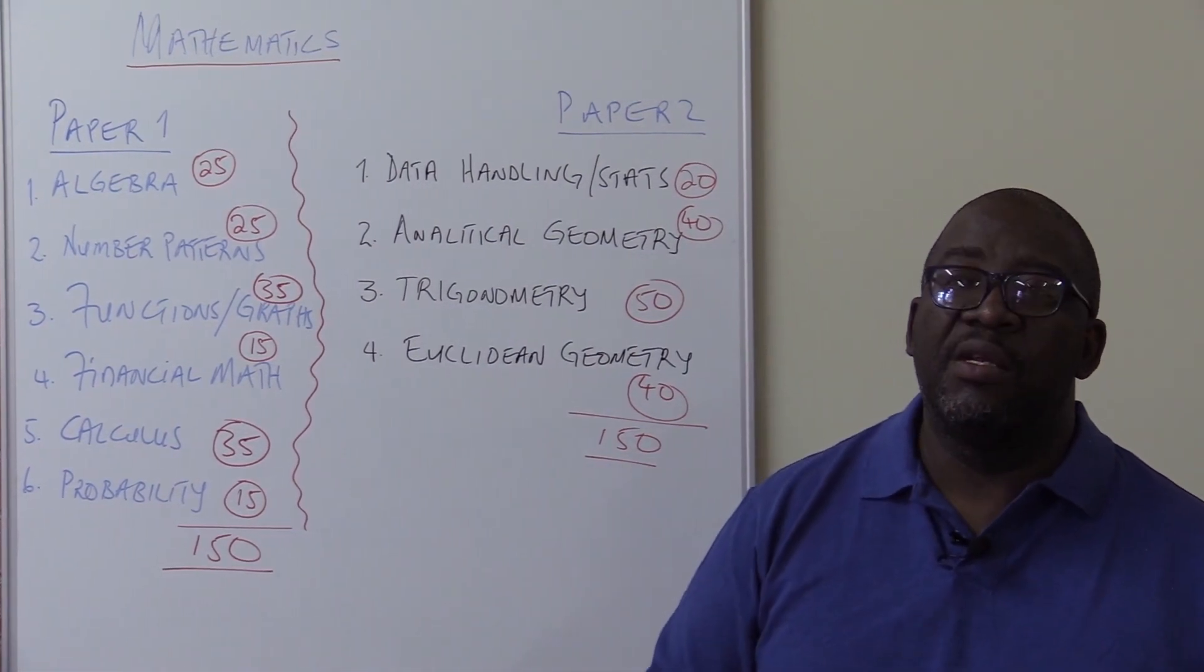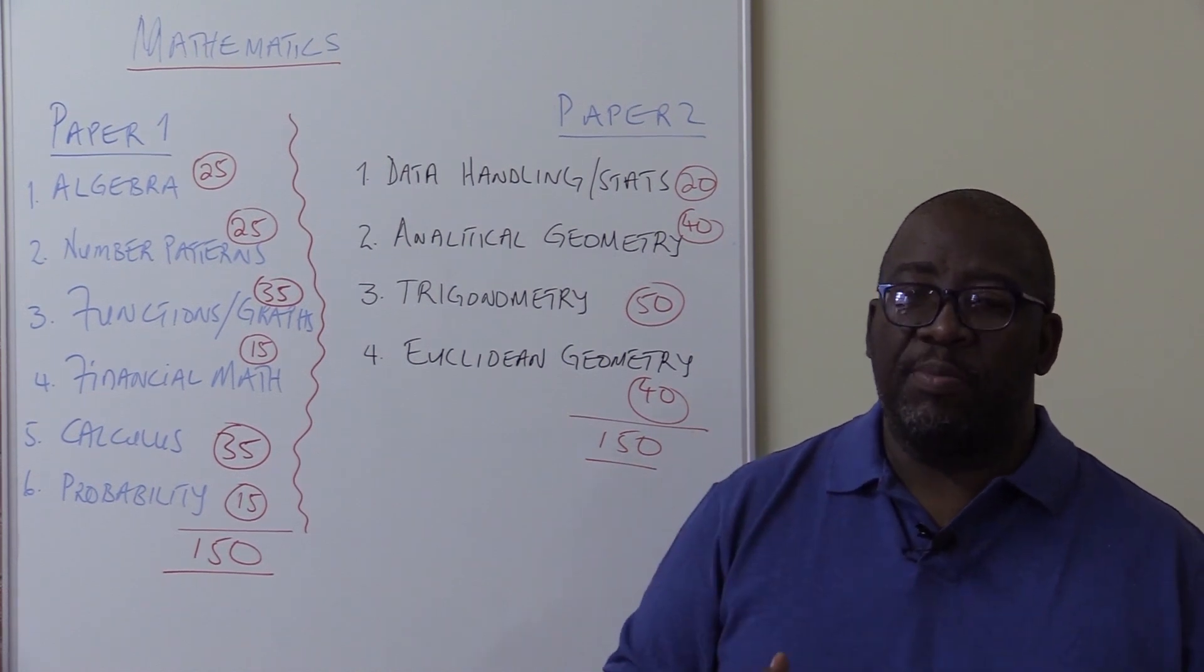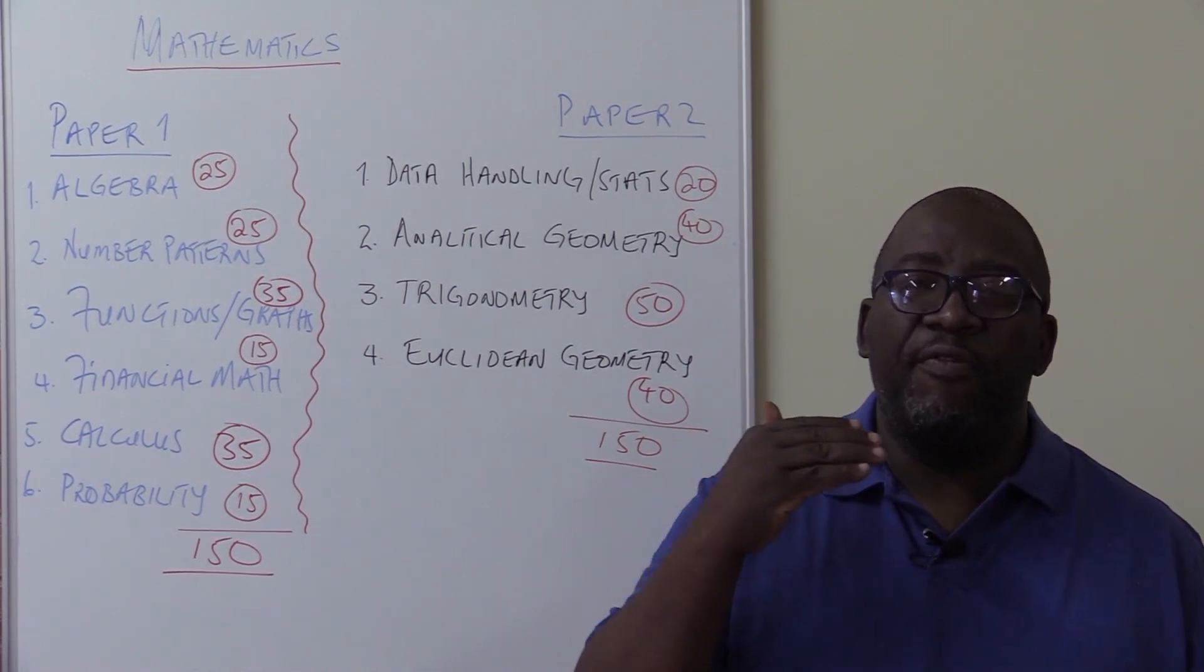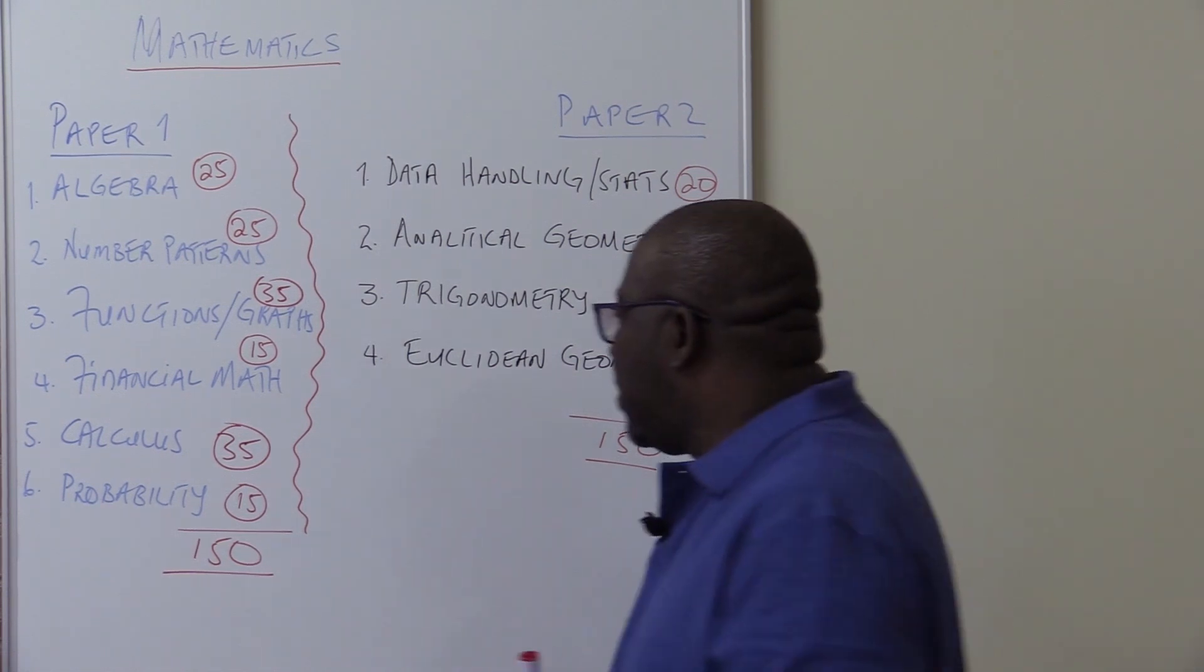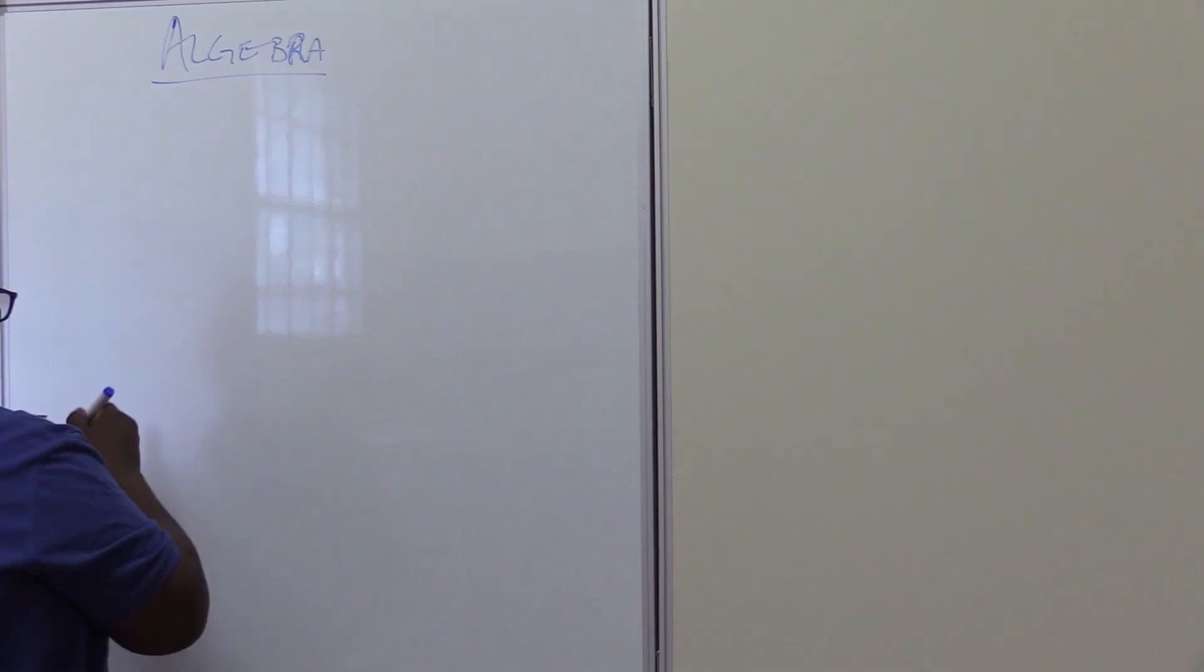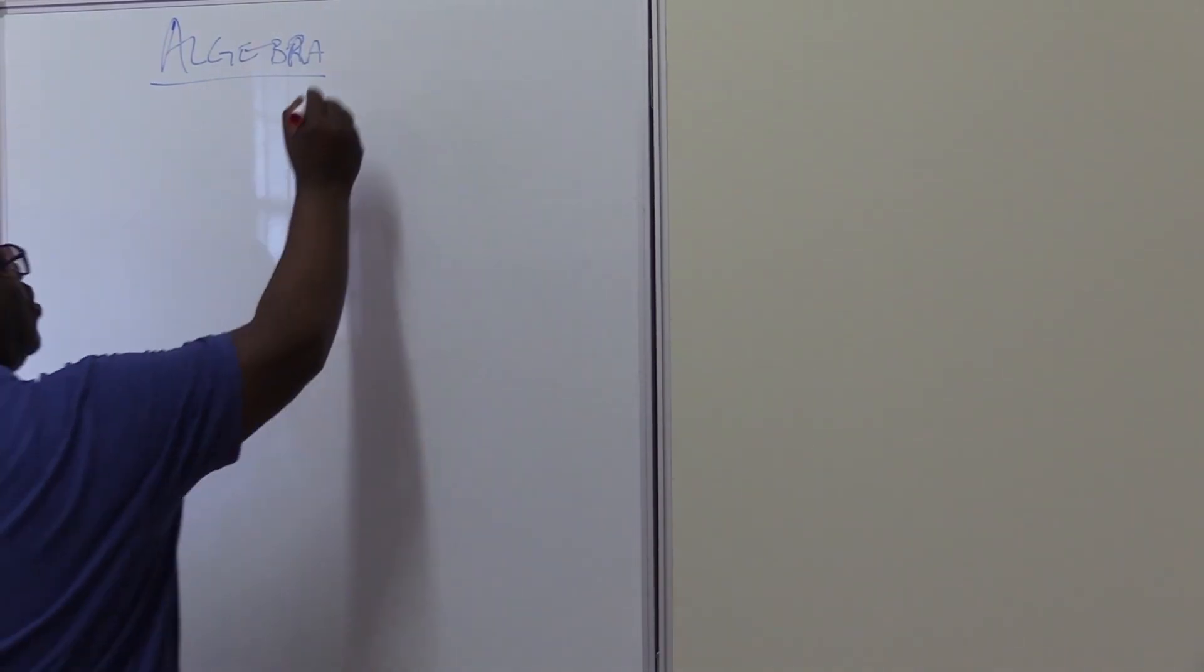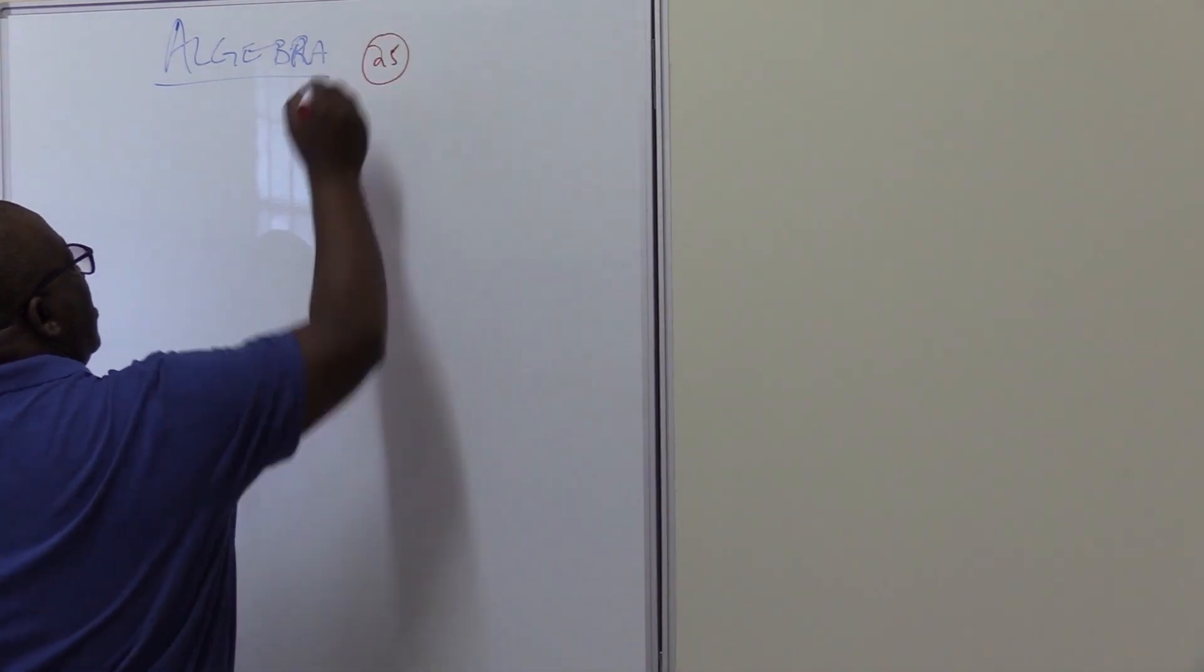How do we look at algebra? It is divided into sub-topics. I said there are about seven sub-topics that I want us to look at. I want us to look at algebra in these lessons. Remember we said it carries about 25 marks in the exams, plus or minus 25.